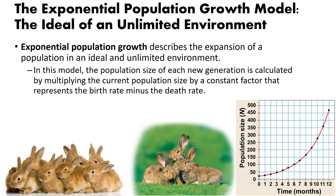Some populations have exponential population growth — this assumes an unlimited environment, which is unrealistic because there's never truly unlimited space or food. Rabbits, for example, can increase their population at a very fast rate. In a hypothetical unlimited environment with constant births and deaths, you would have this exponential growth curve. But in reality, there are always limitations in space, food, and water.